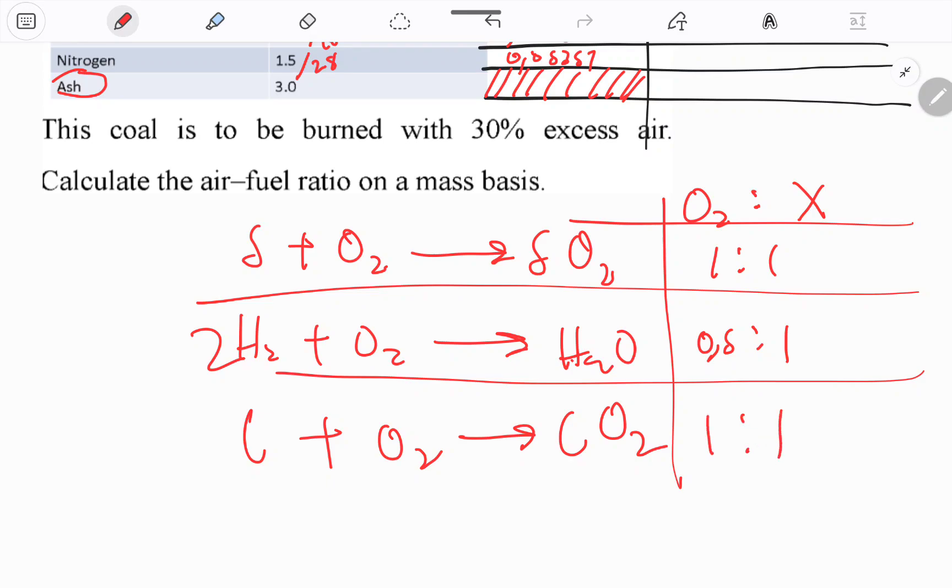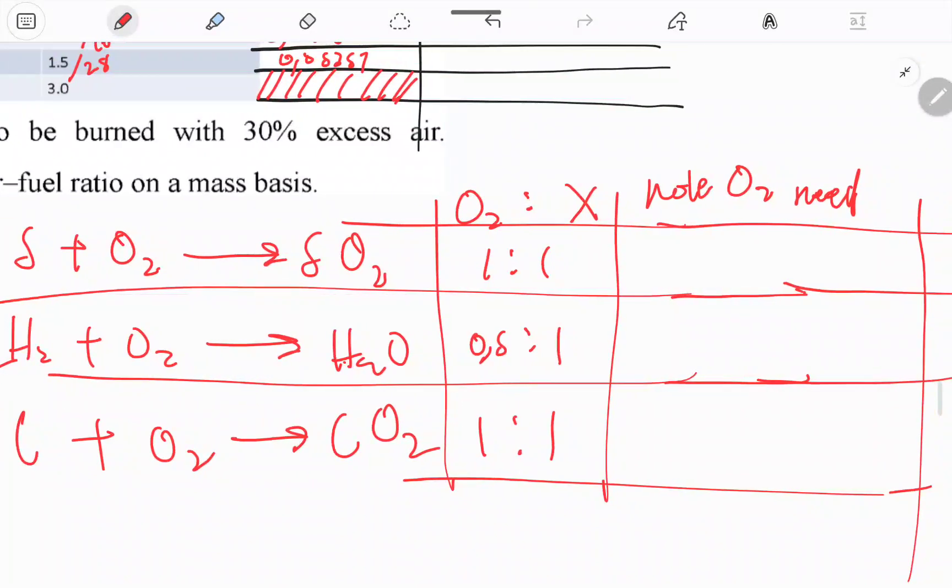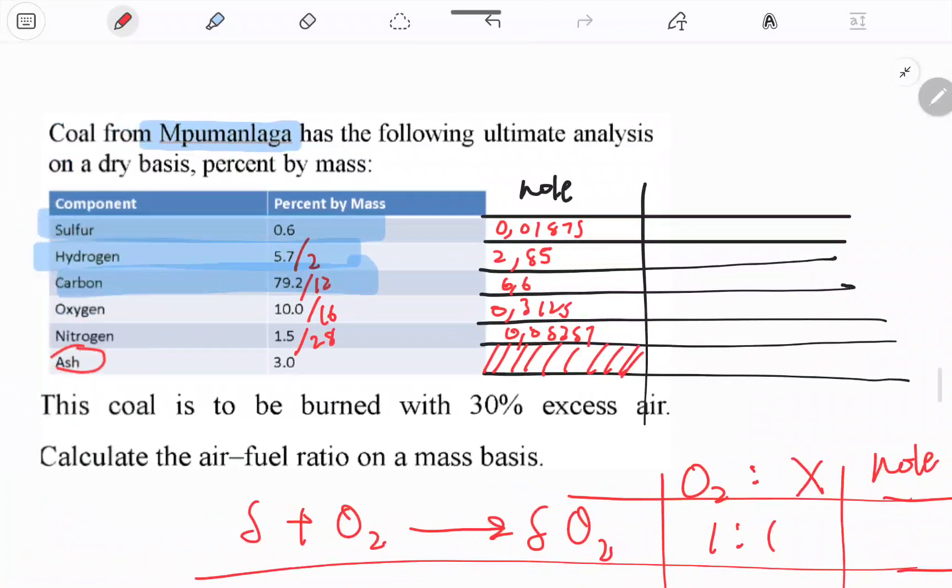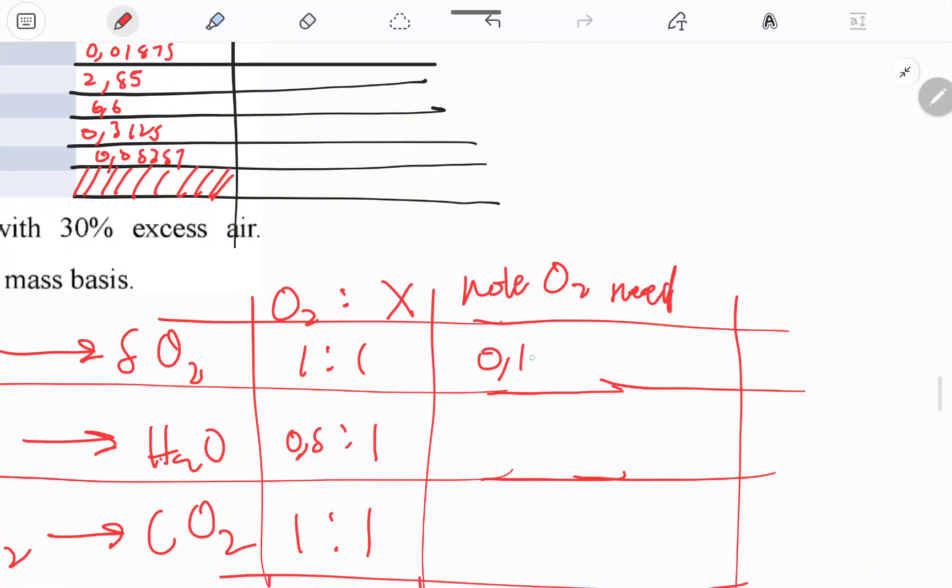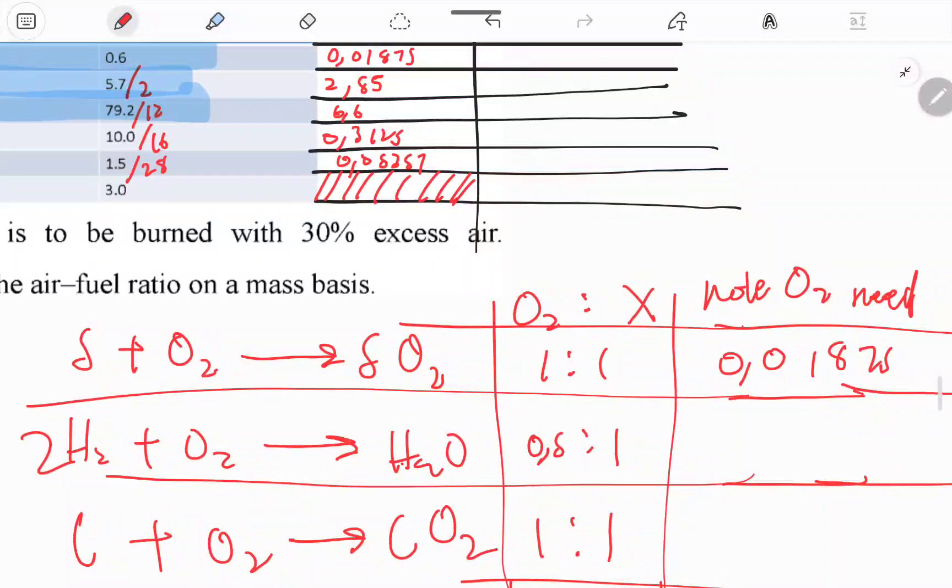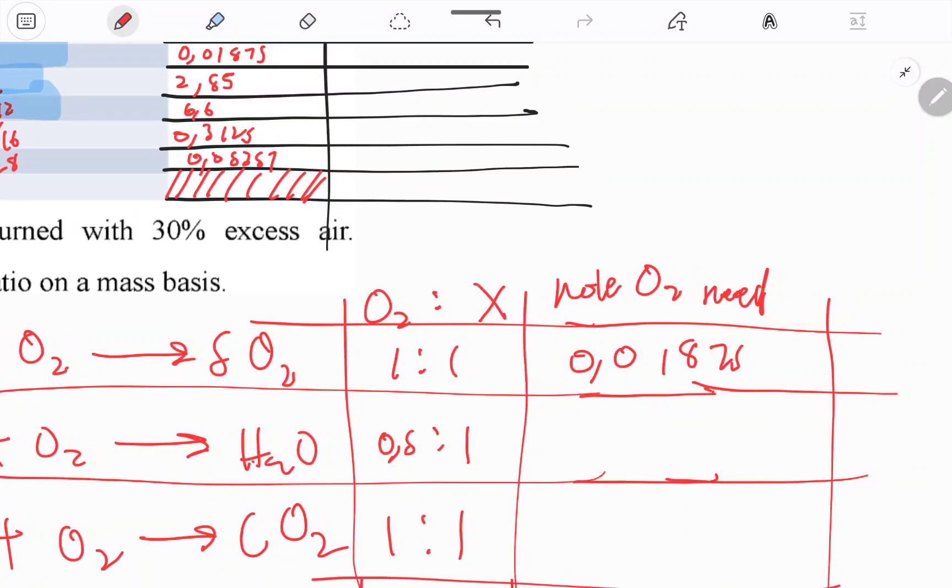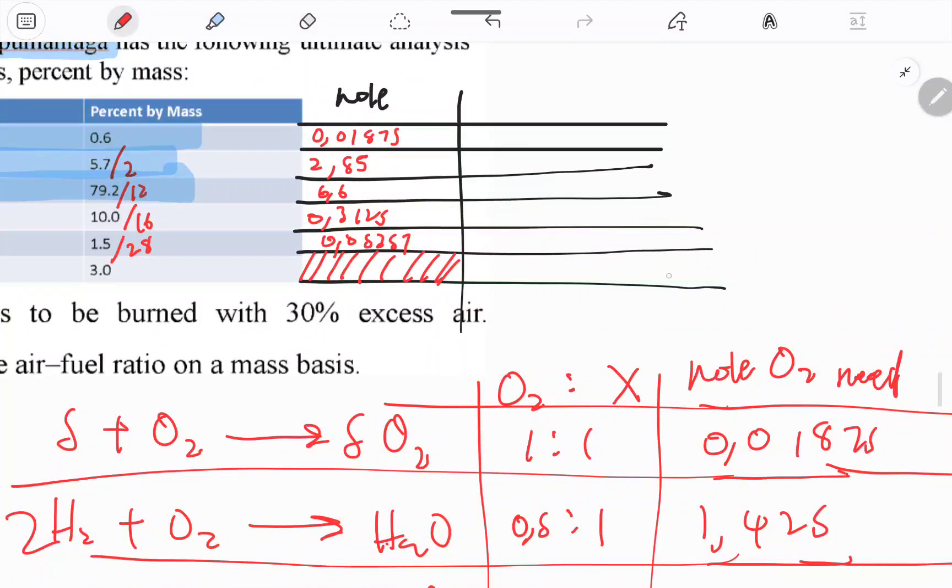So we can find moles of oxygen that is needed for each of these sub-reactions. For the first one, we just need the moles as is. For this one, we have to have whatever that is.